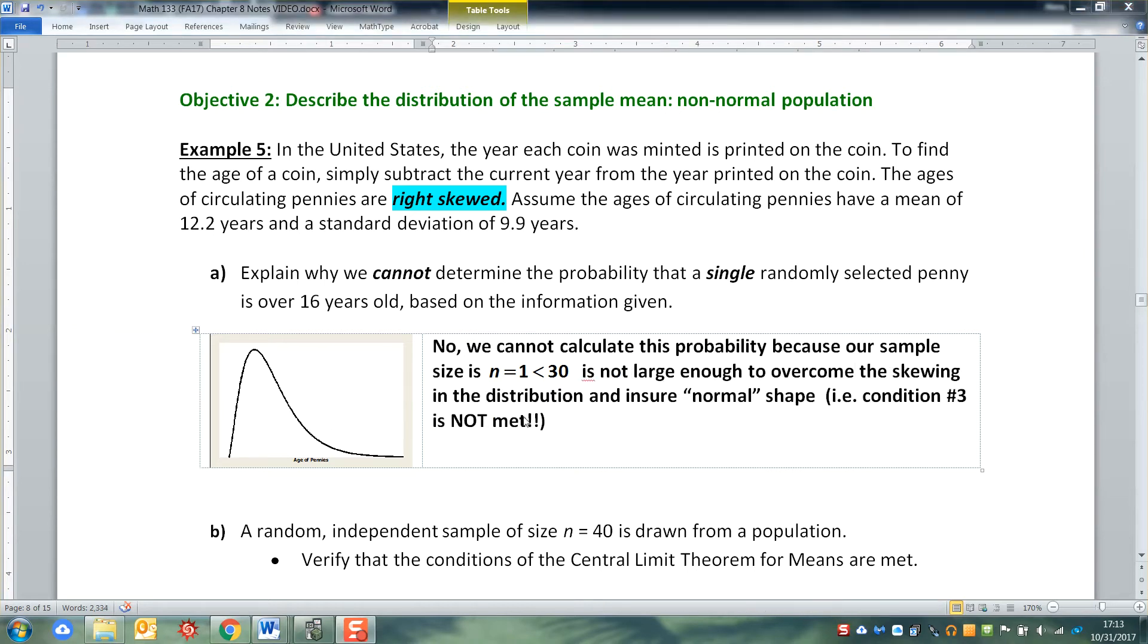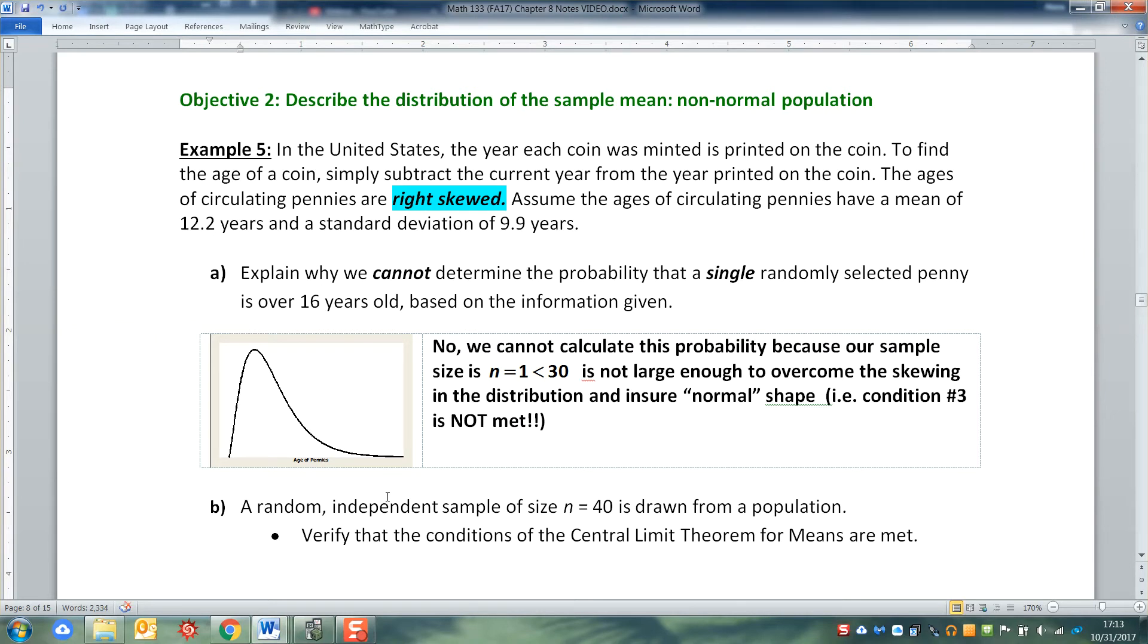I think I typed that up a little bit better. So we cannot calculate any probabilities because our sample size, which is n equals 1, is less than 30. And that's not large enough to overcome the skewing of the distribution to ensure a normal shape. In other words, condition 3 is not met.